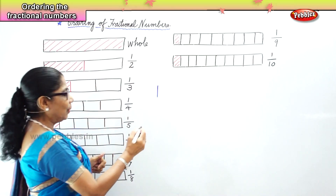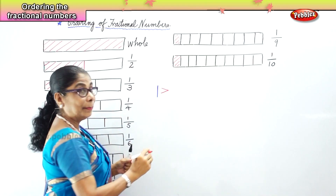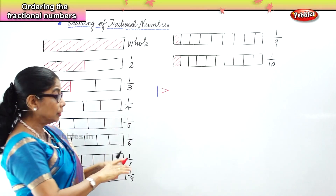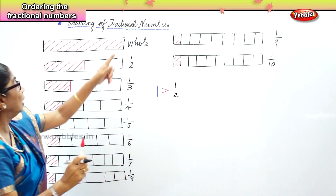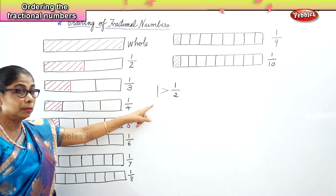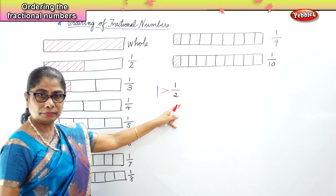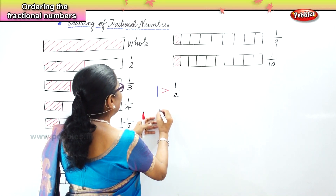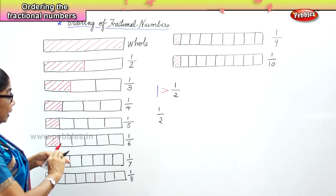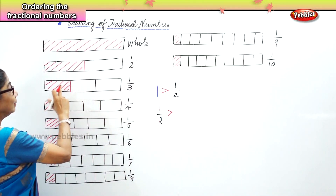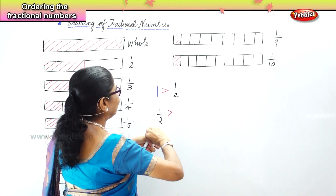Definitely the one whole is greater than one by two. The greater sign — the bird has swallowed the bigger part. So one by one is greater than one by two. When we look at the picture, the whole is fully colored, so one whole is bigger than half. Now this half is greater than one by three. That clear? One by three.